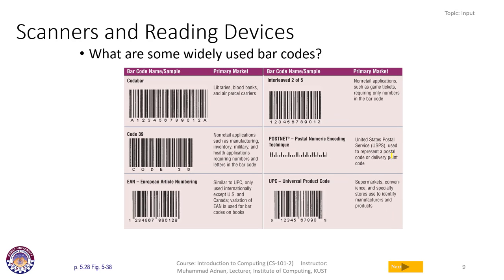Some widely used barcode types include Code Bar, Code 39, European Article Numbering (EAN), Interleaved barcodes, POSTNET numeric encoding, and Universal barcode. All of them have special meanings and are used widely throughout the world. You can even download them from the internet and use them in your own business or shop.